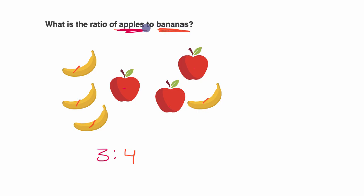Order matters. If they said the ratio of bananas to apples, then this would be four to three. But they say apples to bananas, so it's three to four — three apples for every four bananas.